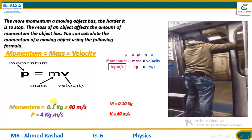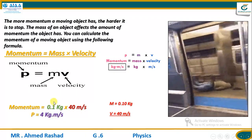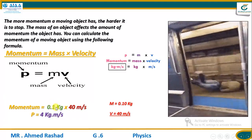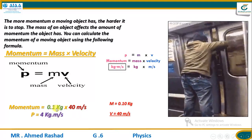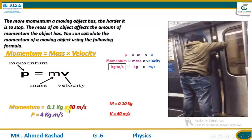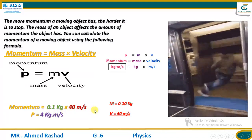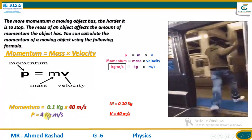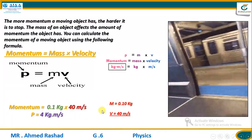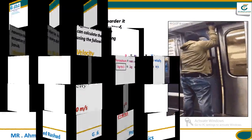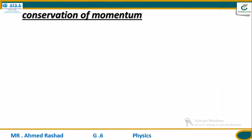Now all of you understand momentum, how to calculate it, and the effect of a sudden change in momentum. The direction of momentum is just like the direction of velocity of an object. Now we're going to the next step, which is called conservation of momentum.